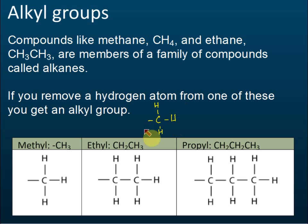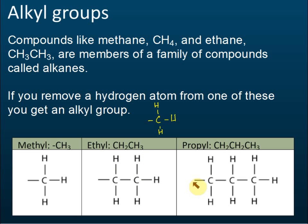For example, if there is a hydrogen here, this is a two-carbon alkane and the name is ethane. But if we remove that hydrogen, it becomes an alkyl group and the name is ethyl. Similarly, if there is one hydrogen here then it is propane, but if we remove the hydrogen it becomes an alkyl group called propyl.